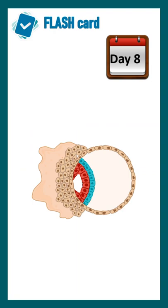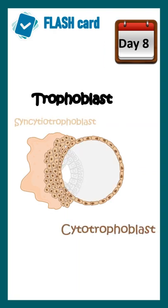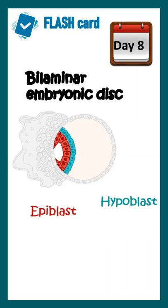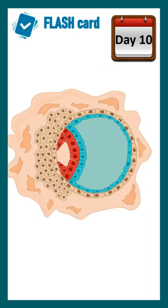At day 8, the trophoblast is now subdivided into the cytotrophoblast and the syncytiotrophoblast, and the inner cell mass further divides into the epiblast and hypoblast. An amniotic cavity starts forming at this particular day.